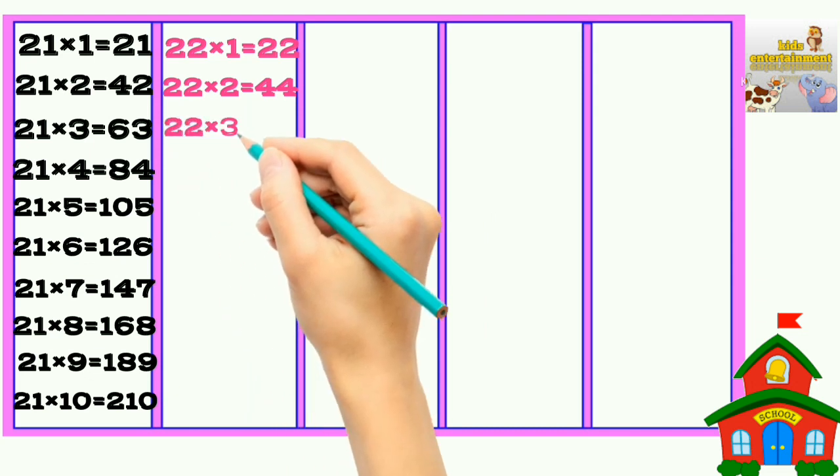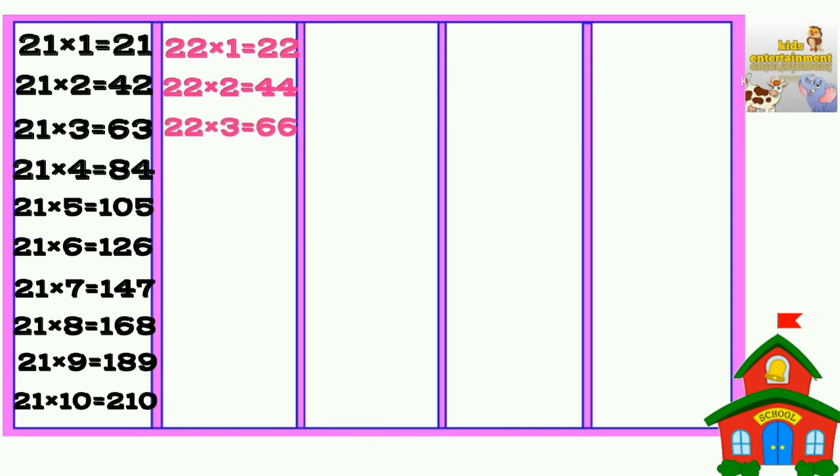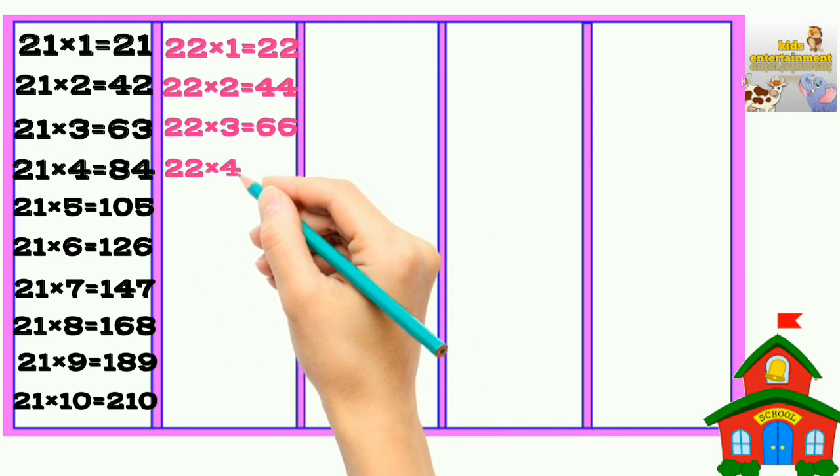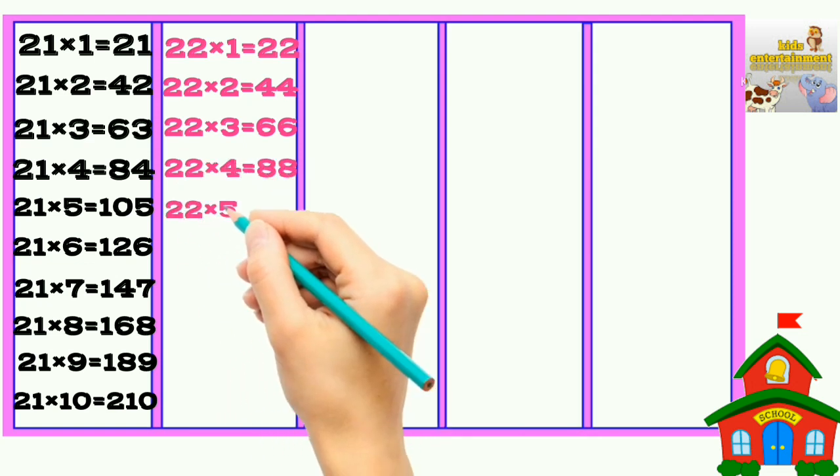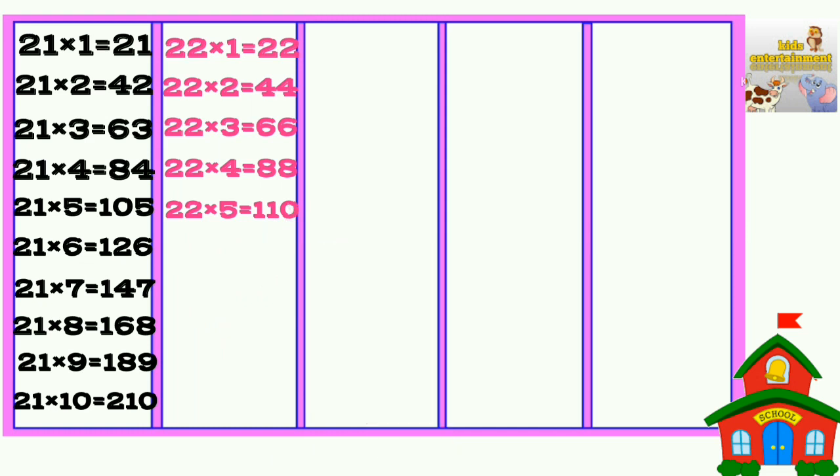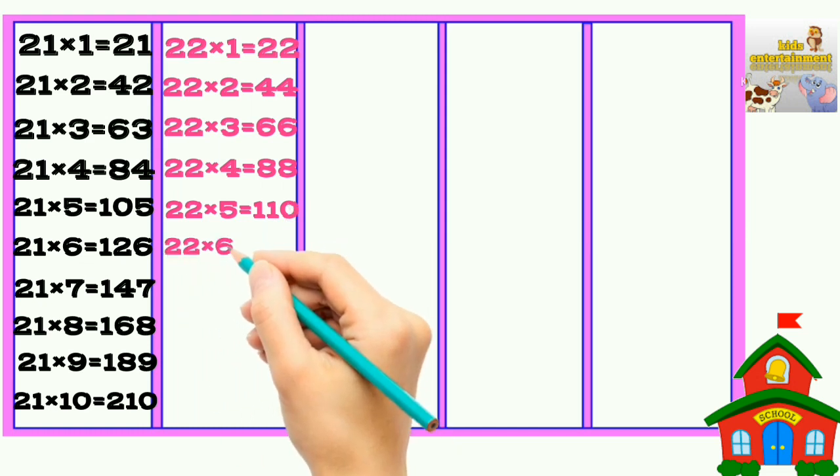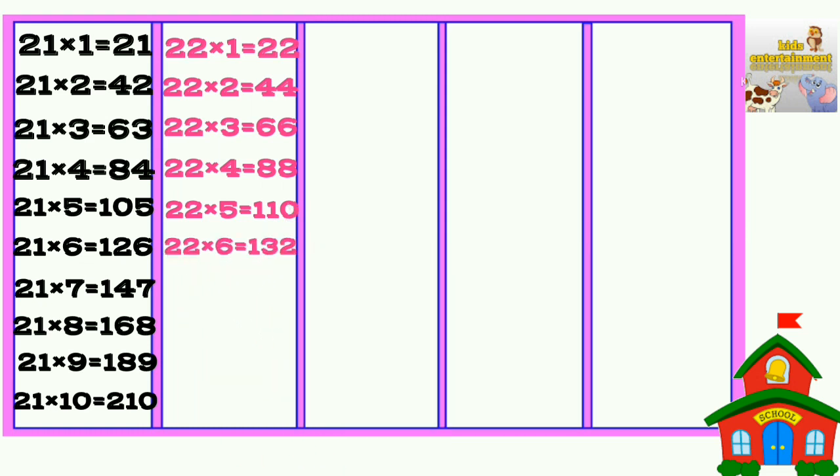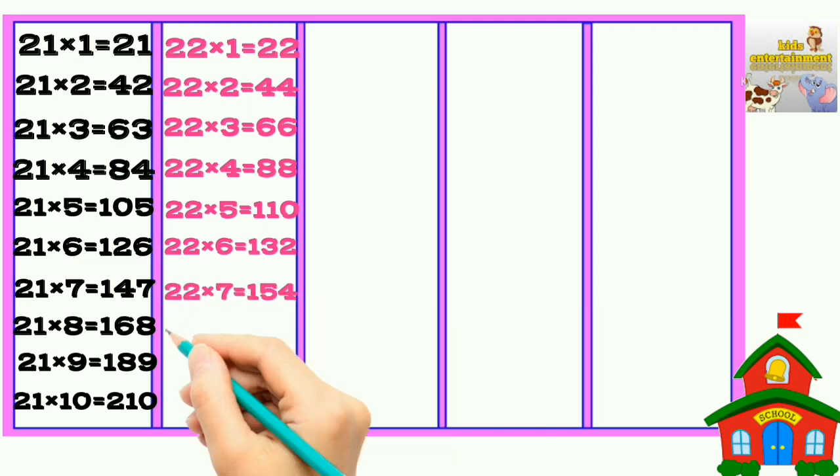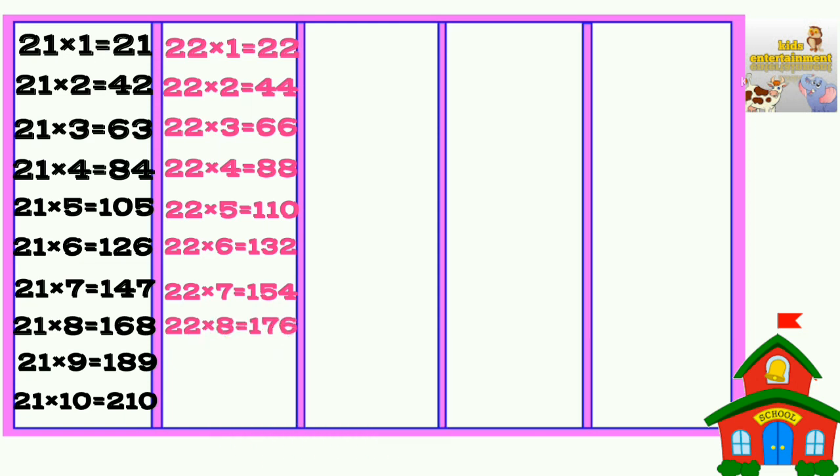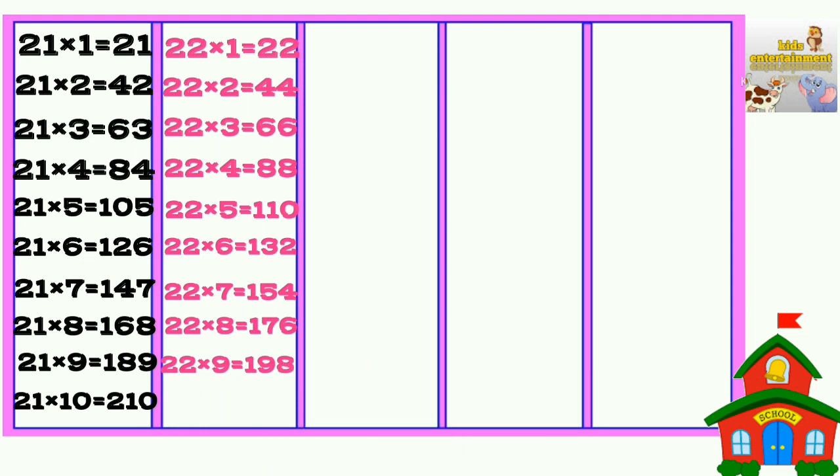22 times 2 is 44, 22 times 3 is 66, 22 times 4 is 88, 22 times 5 is 110, 22 times 6 is 132, 22 times 7 is 154, 22 times 8 is 176, 22 times 9 is 198.